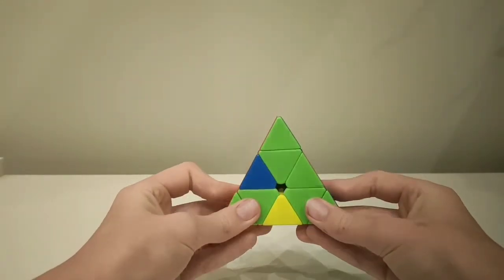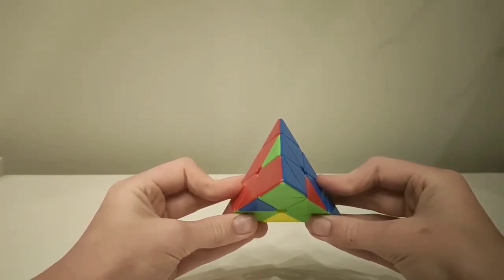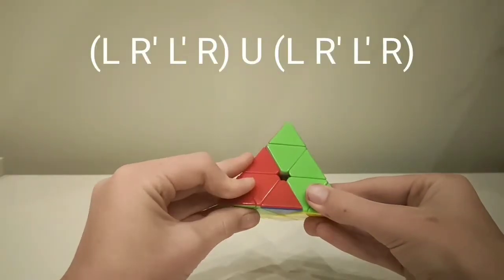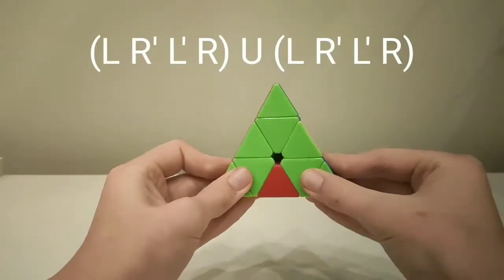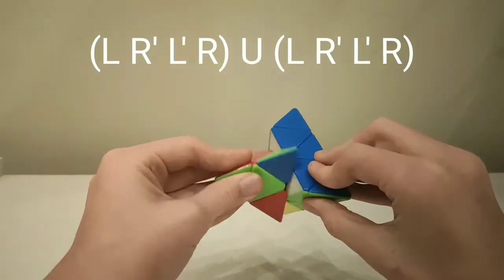This is the second case, where there are three bars, all pointing down to the right. The algorithm for this is L R' L' R U L R' L' R.